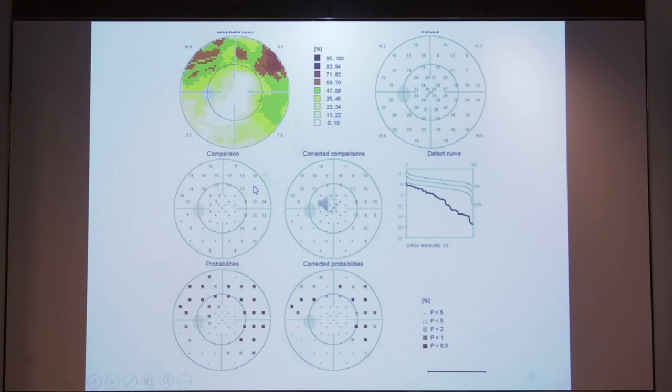The middle part gives you the comparison plots, followed by the probability plots, as well as the corrected comparison plots and the corrected probability plots, which are similar to our pattern standard deviation in the Humphrey's perimeter. Instead of a gray scale, you can have a colored scale here on top, which can give you an overview of the defect. You have what is known as the defect curve or the Bebe's curve on the right.